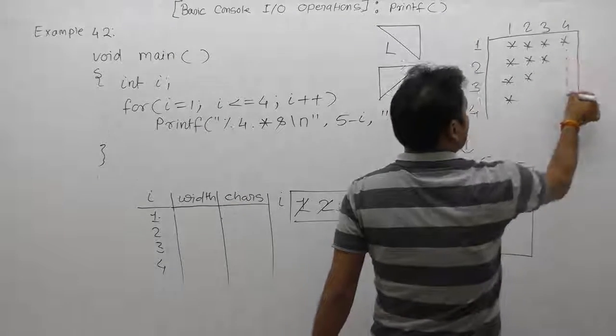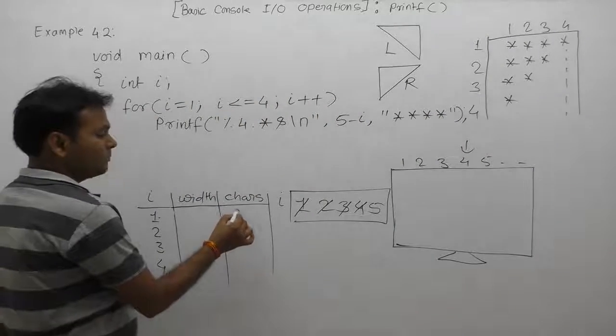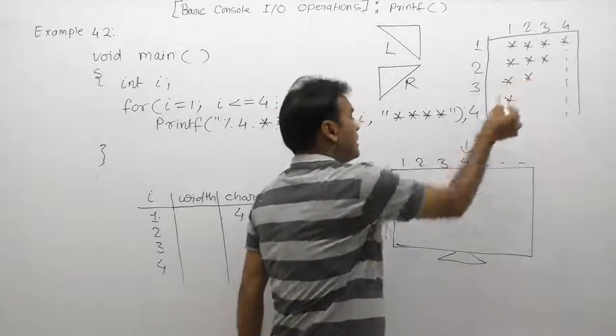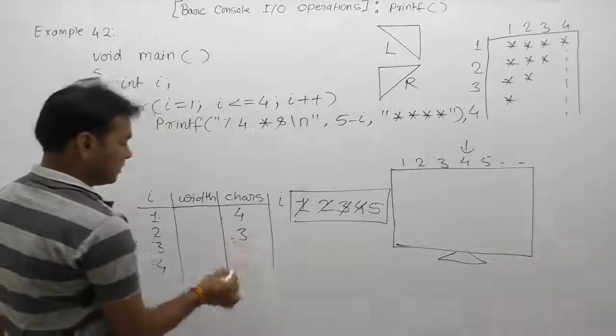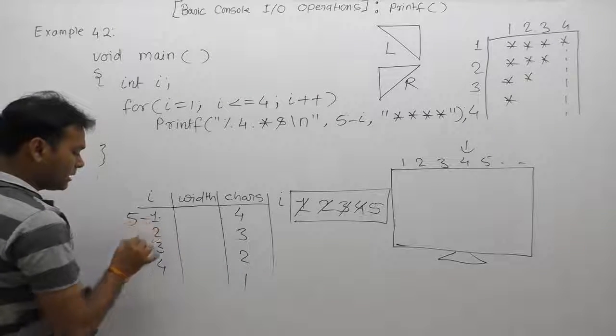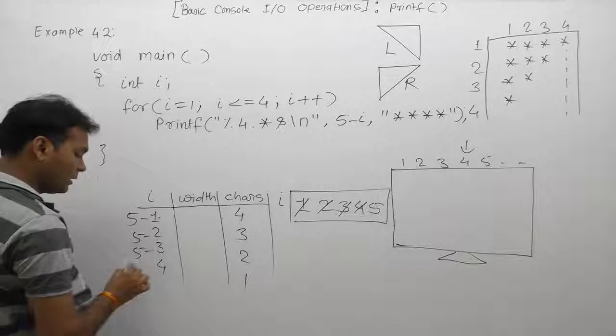In the first case, how many spaces and how many stars are required? In the second line, how many stars are required? Again 3, 2, then 1. This is the same pattern: 5 minus i. 5 minus 1 is 4, 5 minus 2 is 3, 5 minus 3 is 2, 5 minus 4 is 1. Same - there is no change.